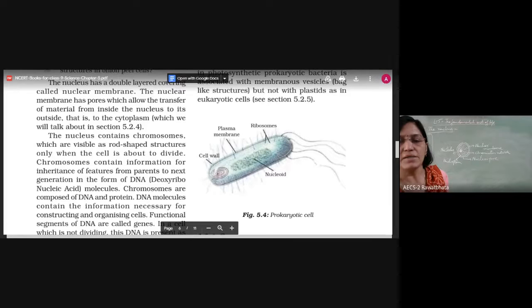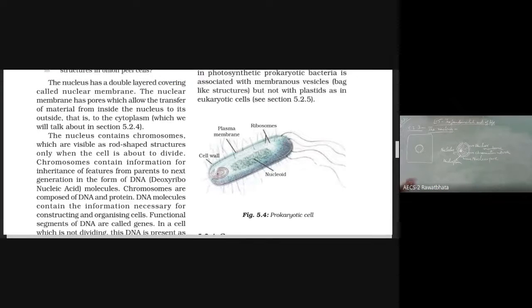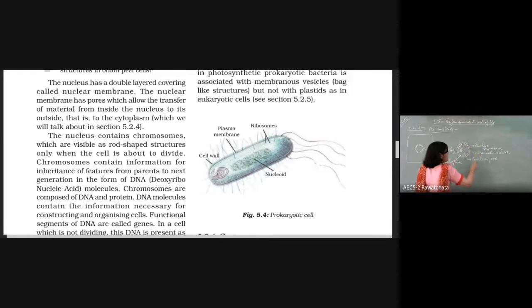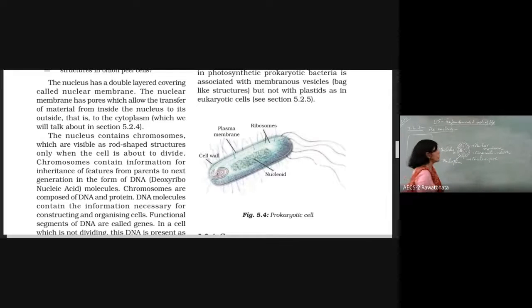The liquid that is present inside the nucleus is known as nucleoplasm. So if the entity has got these four features - it has the nuclear membrane, the nuclear pores, it has the chromatin network inside, it has the nucleoplasm and the nucleolus - then we are going to call it a nucleus.